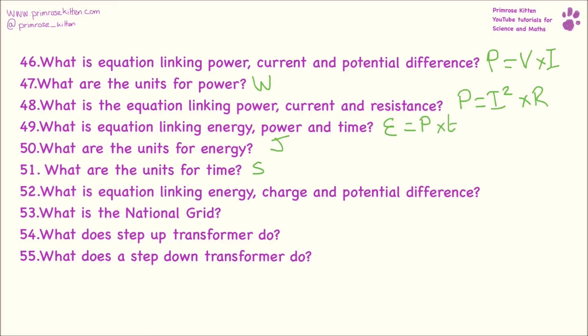The equation linking energy, charge and potential difference. Energy equals charge times potential difference. The national grid is a network of cables that send electricity around the UK. Step up transformers increase the voltage. And step down transformers decrease the voltage. They step up so that they can carry them more efficiently. And step down the voltage so that it is safe that we can use them in our homes.